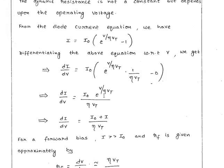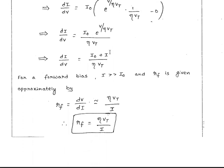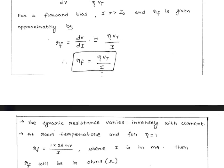Differentiating gives: I₀ · e^(V/ηVT) divided by ηVT. Since I₀ · e^(V/ηVT) ≈ I + I₀ (the diode current plus saturation current), and since I₀ is negligible compared to I, we can simplify. Therefore, Rf = dV/dI = ηVT / I.